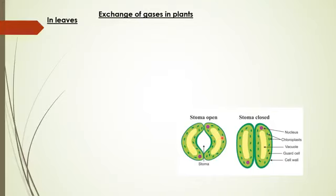The direction of diffusion mainly depends on the environmental condition and the requirement of the plant. The exchange of gases in plants during daytime and during the night is entirely different, and we will see what that difference is in the case of leaves.